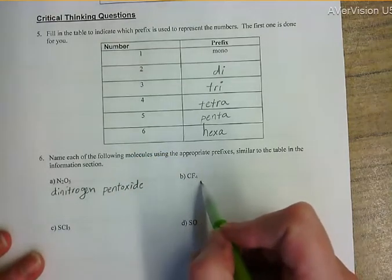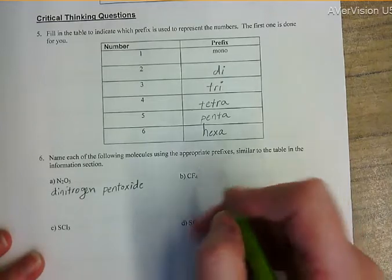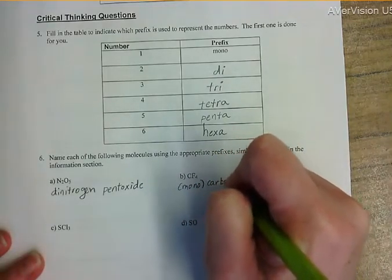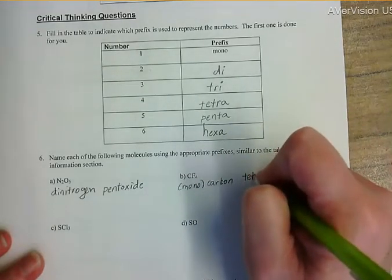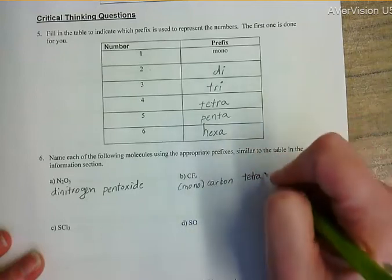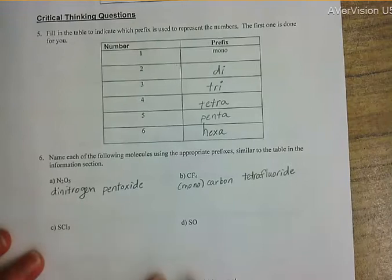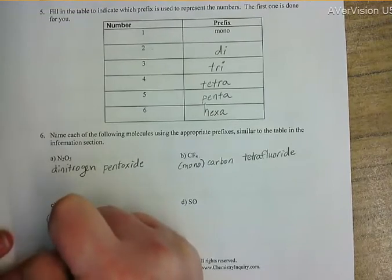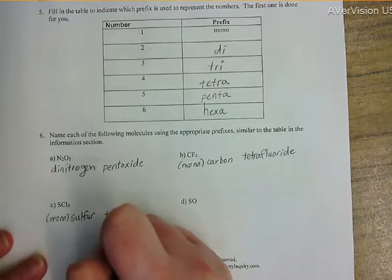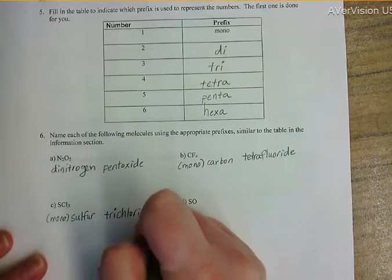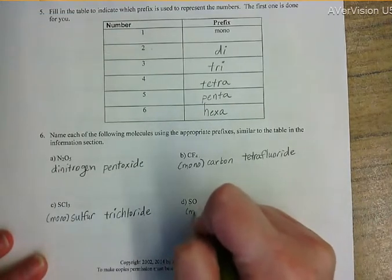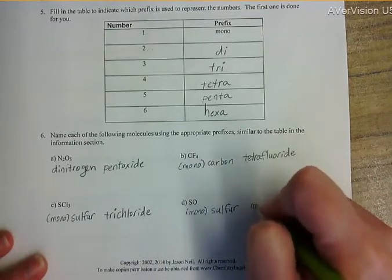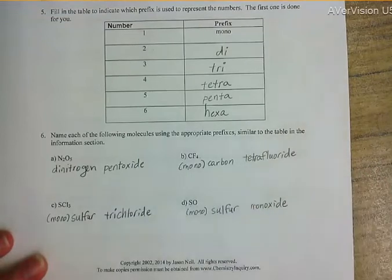CF4: this is a molecular compound — two nonmetals. Mono is optional on the first element, so mono carbon, and four is tetra, and fluorine becomes fluoride — carbon tetrafluoride. SCl3: mono is optional for sulfur, three is tri, and chlorine becomes chloride — sulfur trichloride. For CO: mono sulfur and the second element always takes mono, so it is carbon monoxide because oxygen becomes oxide.